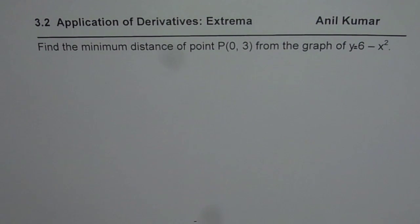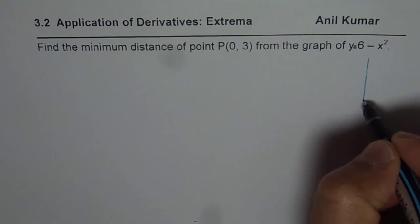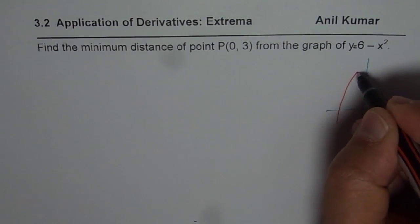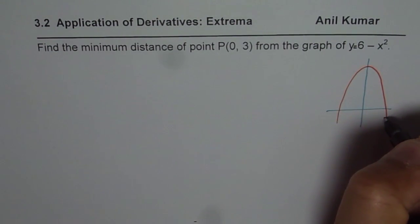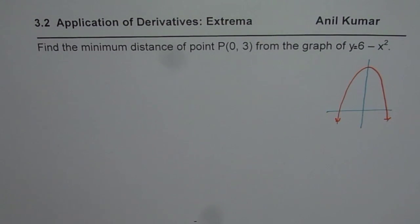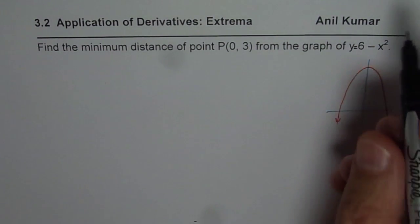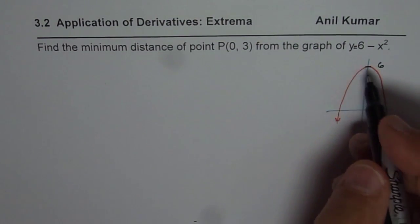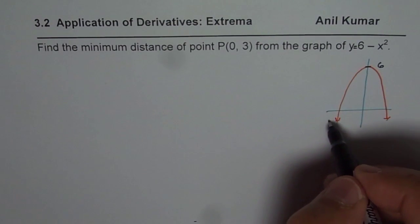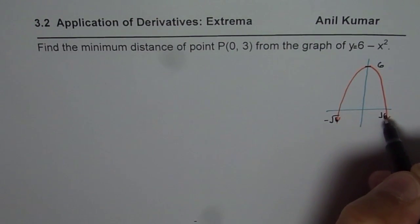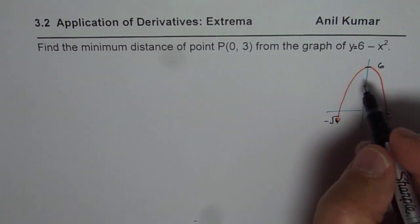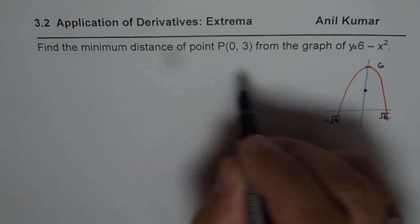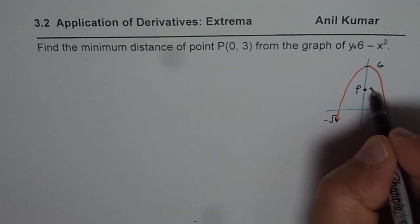6 minus x squared is a parabola which is inverted. Let me sketch one here so that we understand what the question is. The y-intercept value is 6, so if I write 0 for x I get 6. It is inverted, and the x-intercepts will be at square root of 6 and minus square root of 6. We are given a point (0, 3), which is somewhere midway — that is the point P, at y equals 3.